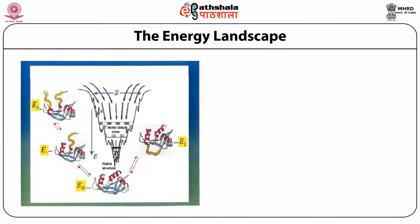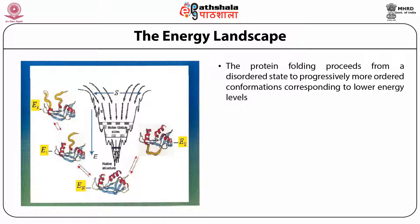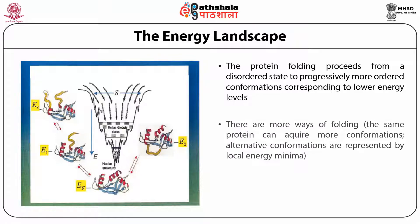In the energy landscape of protein folding, the protein in a disordered state has a large number of conformational ensembles. It proceeds towards a well-defined three-dimensional structure with minimum conformation and minimum energy. Protein folding proceeds from a disordered state to progressively more ordered conformations corresponding to lower energy levels, with alternative conformations represented by local energy minima.